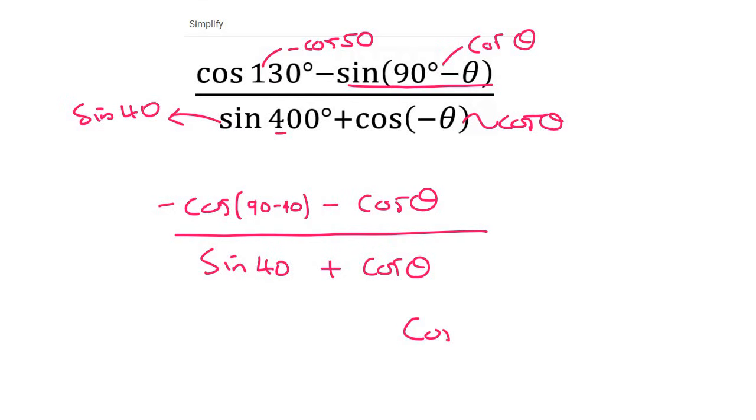But now with our co-functions that you would have written down just now, we know that cos 90 minus x just becomes sin x. So then what does cos 90 minus 40 become? Well, it just becomes sin 40.